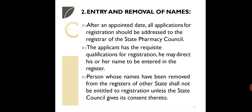Entry and removal of names — what are the particulars on the basis of which there is removal or entry of names of registered pharmacists? After an appointed date, all applications for registration should be addressed to the registrar of the state pharmacy council. If the applicant has the requisite qualification for registration, the registrar may direct their name to be entered in the register. A person whose name has been removed from the register of another state shall not be entitled to registration unless the state council gives its consent.